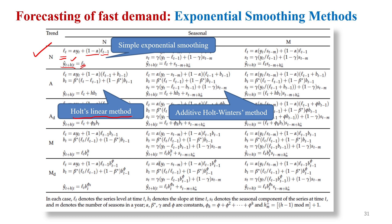For Holt's linear trend method, we have both a level component and a trend component. The forecasted value equals the level plus the trend multiplied by the forecast horizon — whether it is two, three, or four months ahead. Alpha is the weight for the level equation applied to the original time series and the previous level component. For the trend component, we also need beta, which again lies between 0 and 1 and is automatically selected by R, using the current and previous level components plus the previous trend.